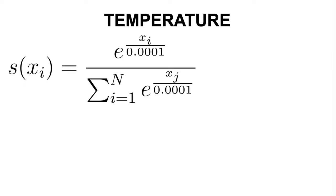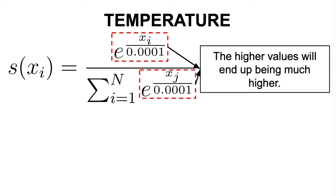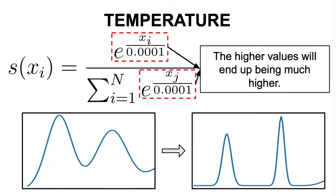On the other hand, a lower temperature, which translates to dividing by a lower number in the exponent and a higher end result for each probability, sharpens the distribution, favoring more probable words and producing more focused and deterministic outputs.